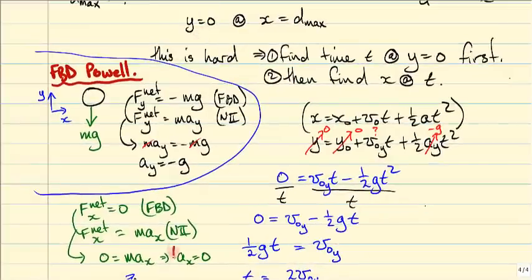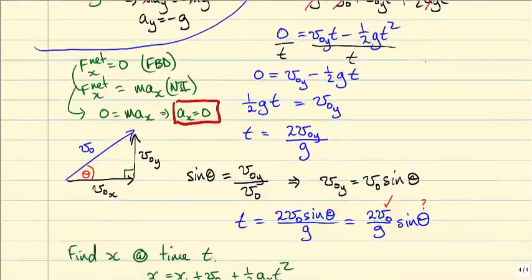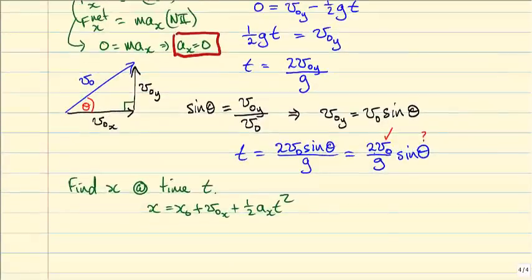This is an important equation for our problem because it means we don't have any acceleration in the x direction, which when I plug it in down here, we get this. That's 0.